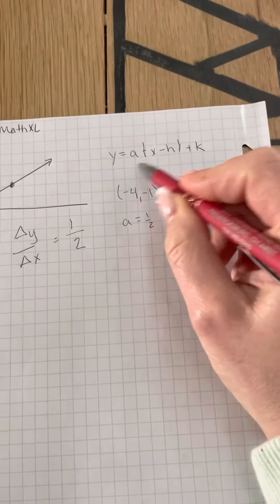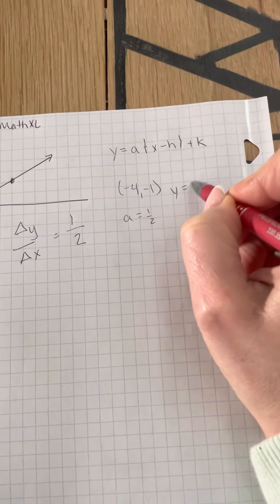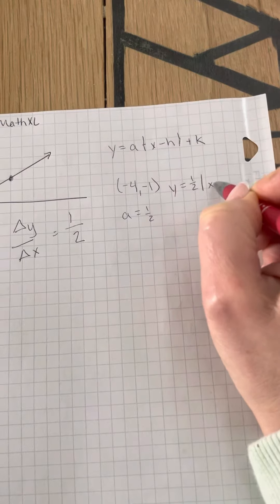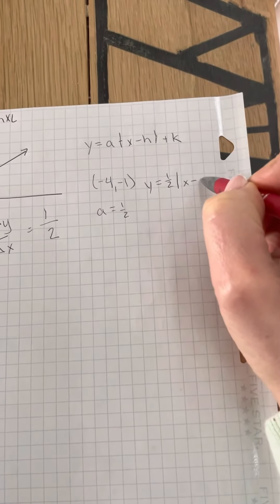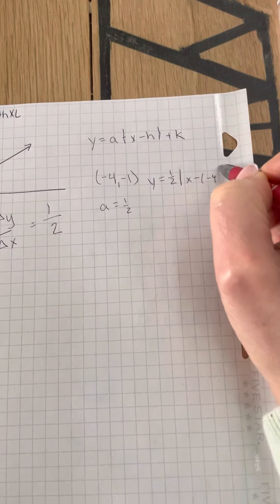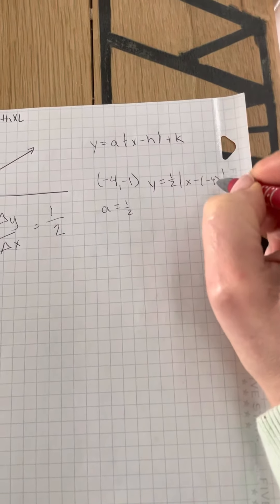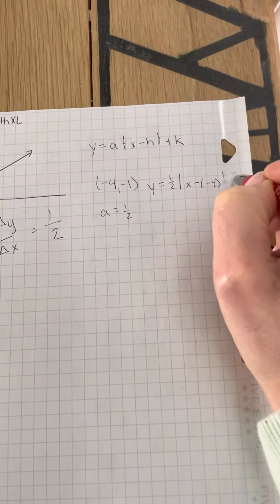So when you put it into your formula, I have Y equals one half, and then X minus negative four. But minus a negative four is actually a positive. I'm running out of room over there. And then minus one.